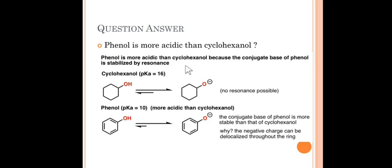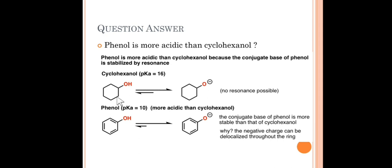The strength of acid depends on its ability to dissociate H⁺ and the stability of the formed conjugate base. In phenol, when H⁺ is dissociated, the phenoxide ion — the conjugate base — is stabilized by resonance or delocalization in the benzene ring. In cyclohexanol, the conjugate base is not stabilized by any delocalization or resonance effect, so it is not stabilized. Therefore, phenol is more acidic than cyclohexanol.